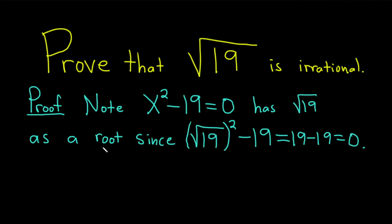So this is a root of this equation. So why does that matter? What does that have to do with the square root of 19 being irrational? Well, there's something called the rational roots theorem. So by the rational roots theorem,